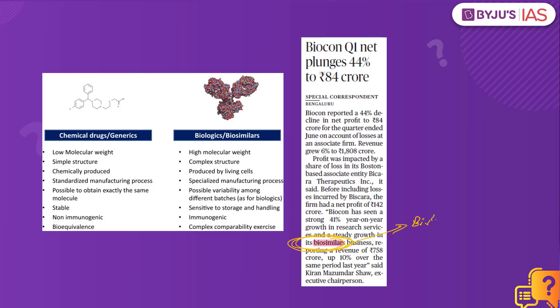A biologic drug is one of the patented products of a particular company which was originally able to extract the medicine from a living organism. So when a prototype or a medicine is designed similar to that of the biologic drug, that is what is called a biosimilar. You have the patented product produced by that particular manufacturing company. Another company making use of a similar structure to the original product after the patented period has expired — the drug that is produced is what is called a biosimilar.